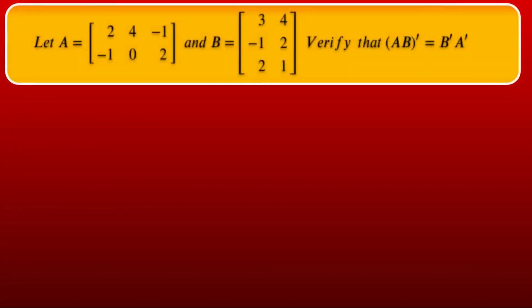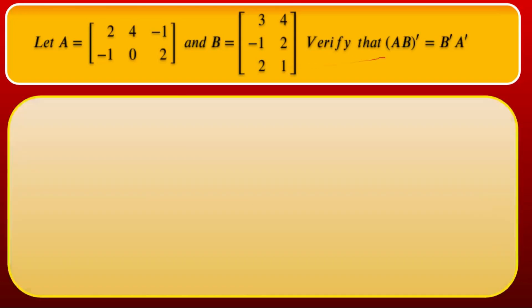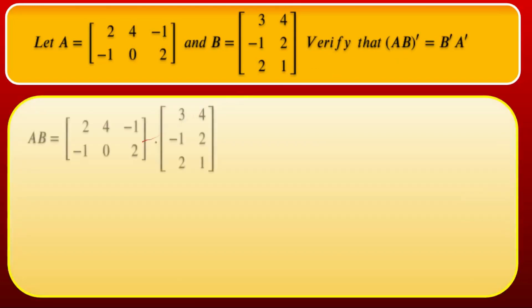Next problem: Let A = [[2, 4, −1], [−1, 0, 2]] and B = [[3, 4], [−1, 2], [2, 1]]. Verify that (AB)^T = B^T · A^T.